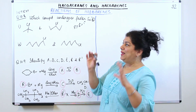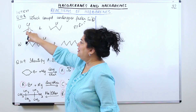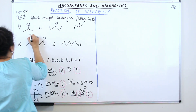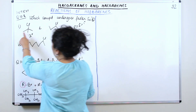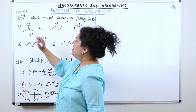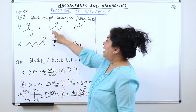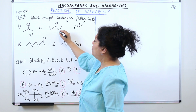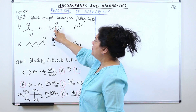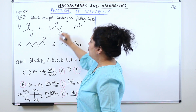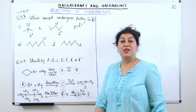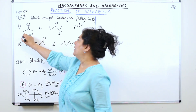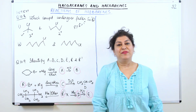So when the chlorine leaves, the carbocation formed would be a tertiary carbocation — do you see here? This carbon is attached to three other carbons, therefore this would be a tertiary carbocation formed in the first step. And here, this carbon is attached to two other carbons, therefore when chlorine leaves, this would be a secondary carbocation. A tertiary carbocation is more stable, therefore this compound would undergo SN1 reaction faster.